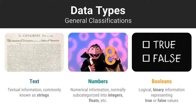Textual information is like the information that you associate with a written work, like the Declaration of Independence, whereas numeric information is what you might associate with the mathematical operations you perform in your math classes.